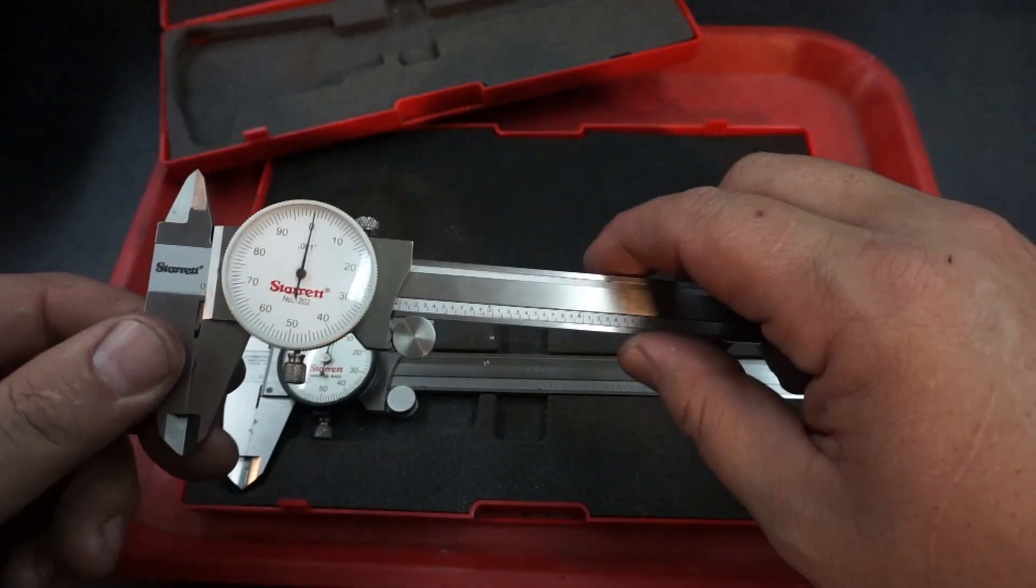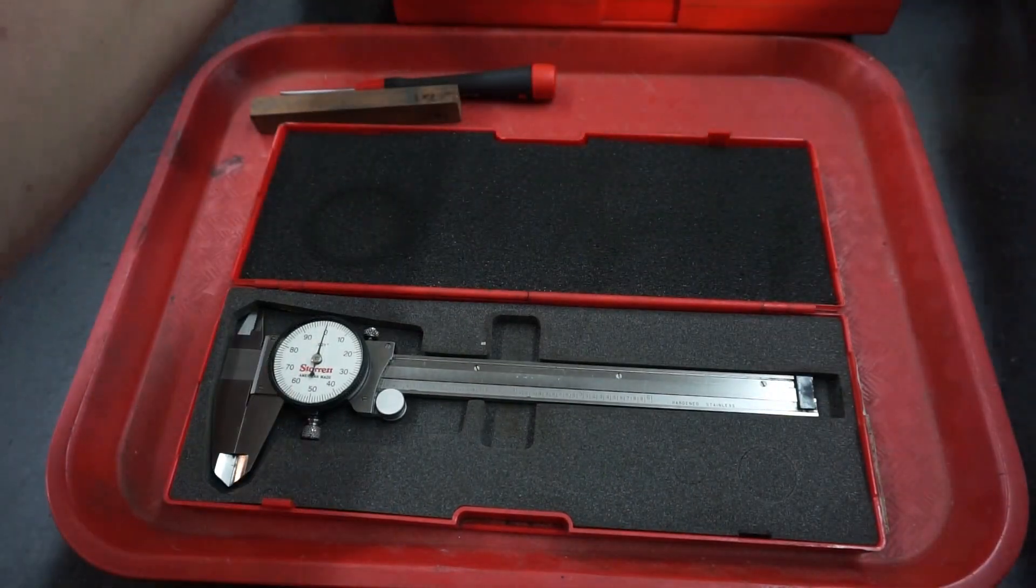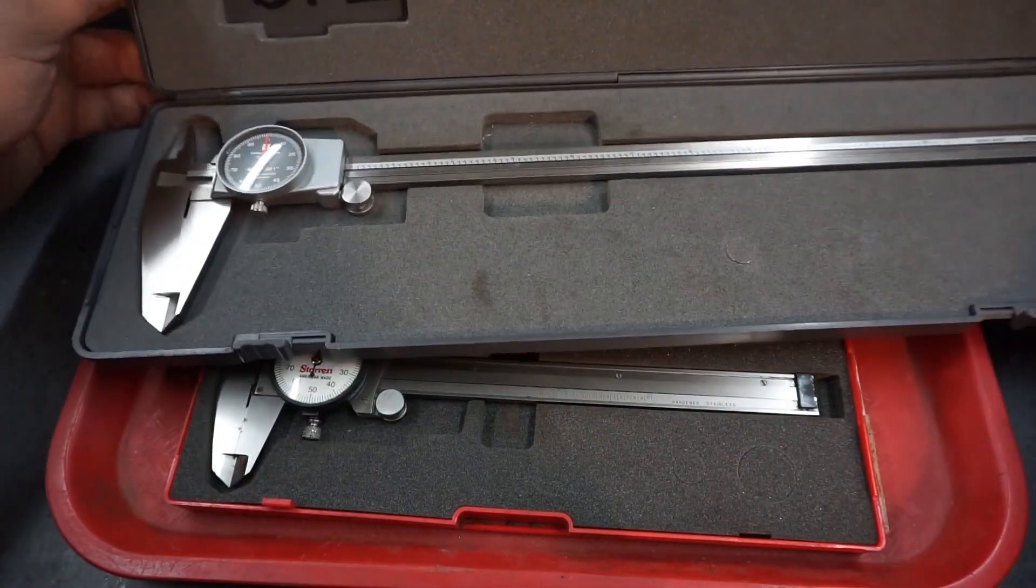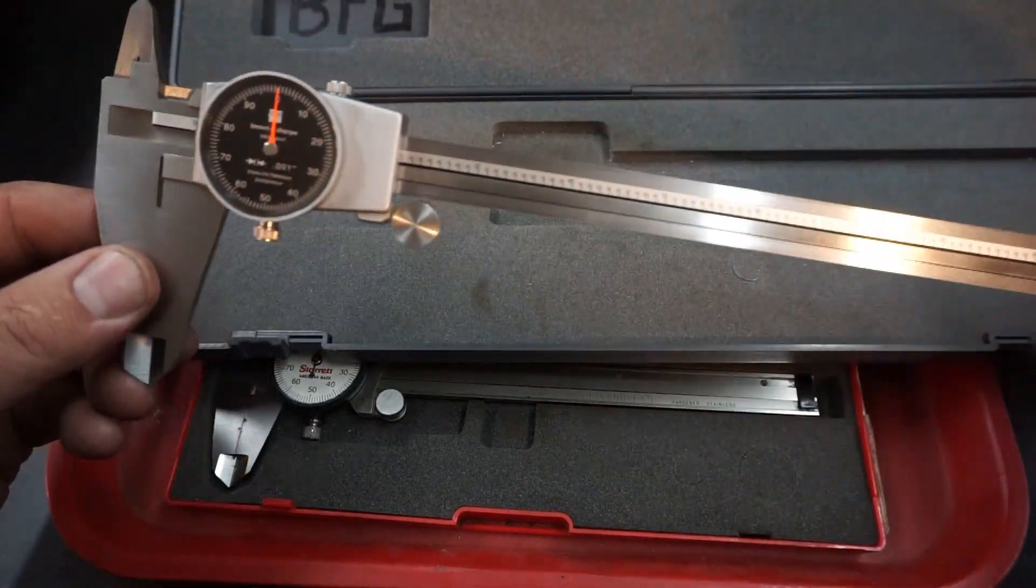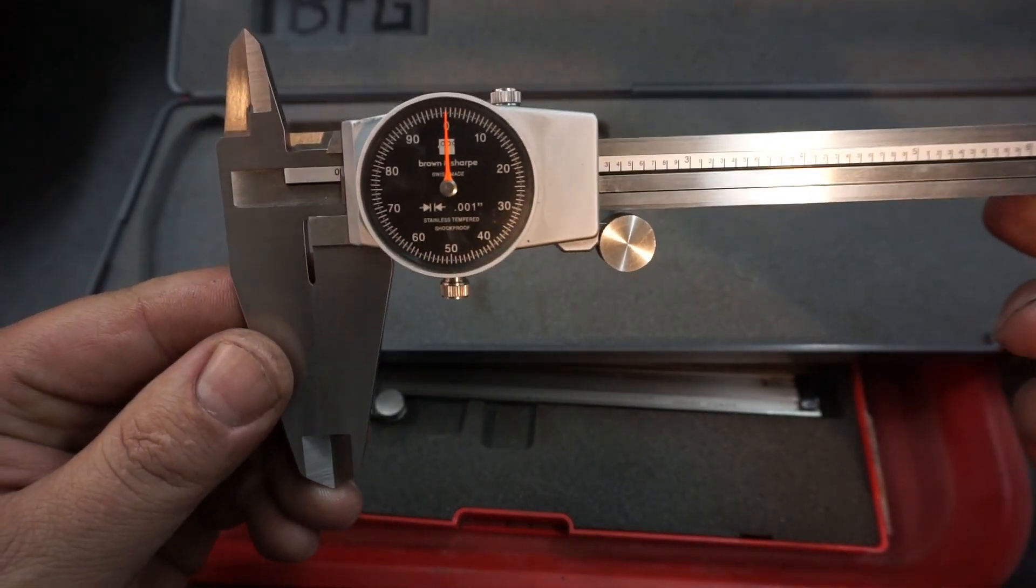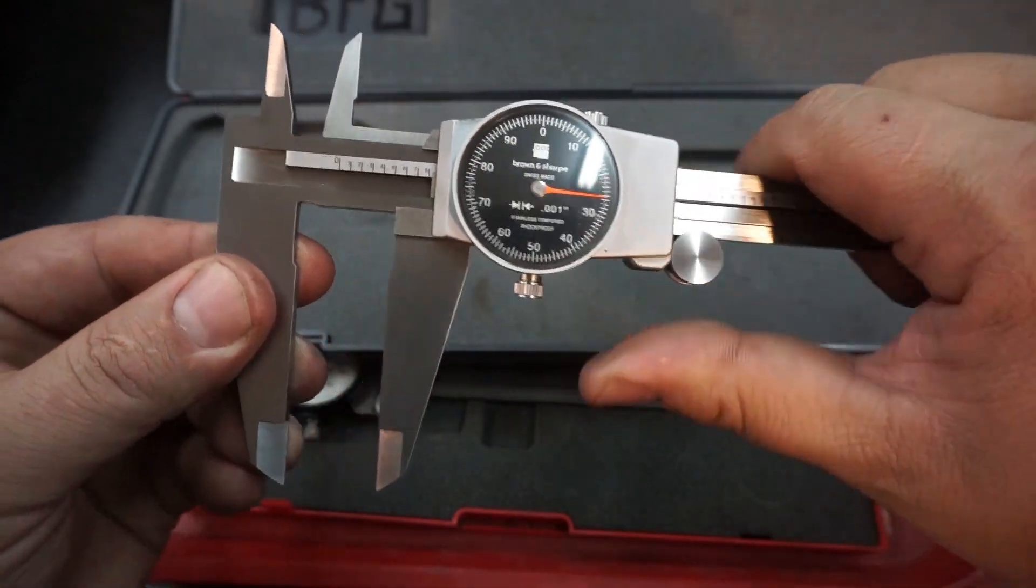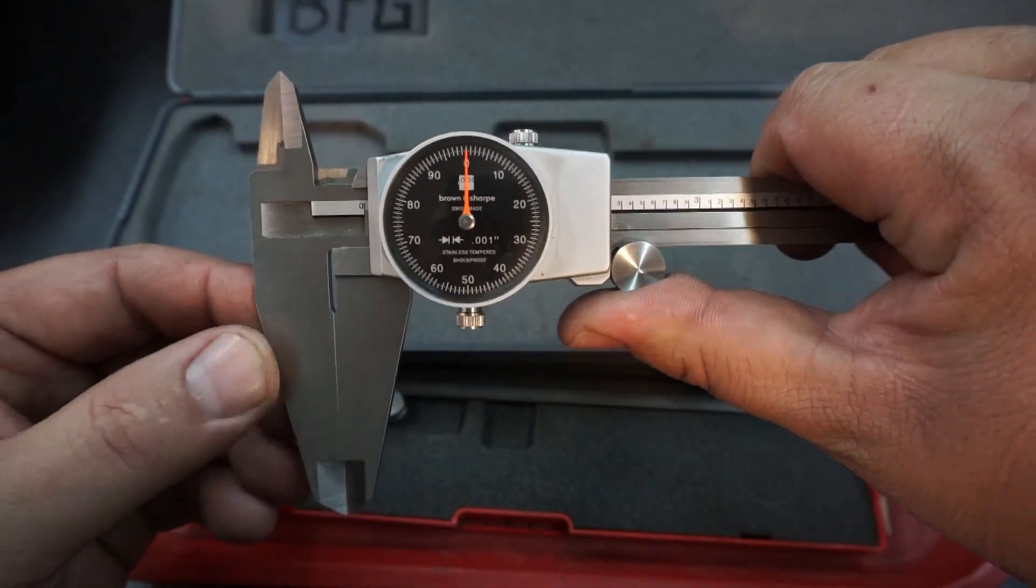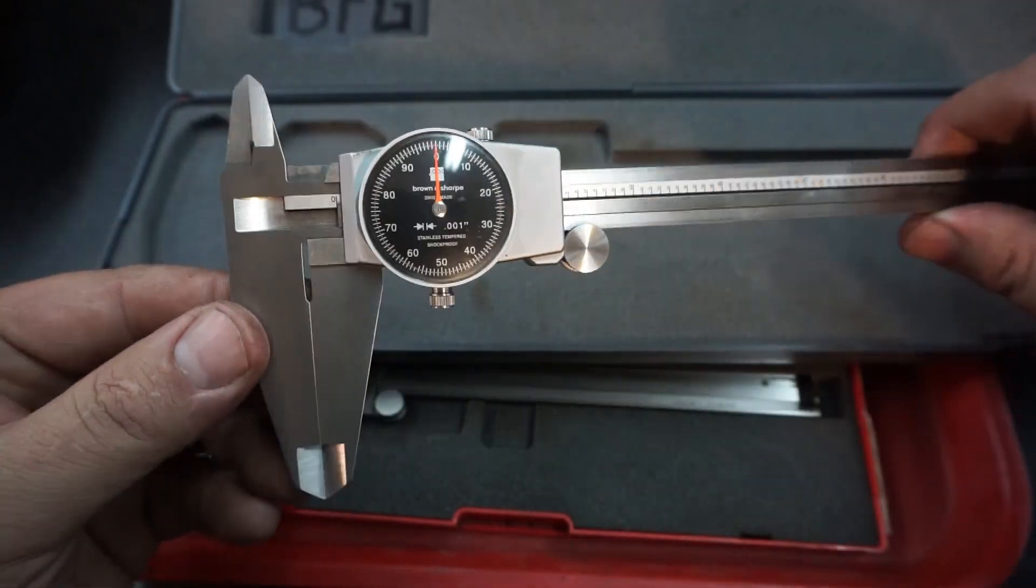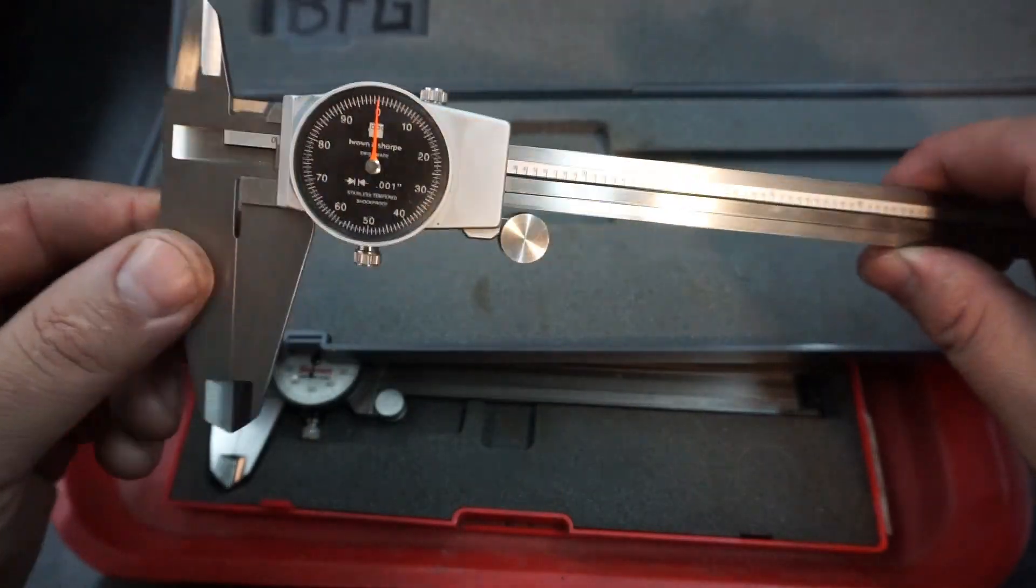And then one more for comparison, these are some that I picked up at a pawn shop a couple months back. Very nice calipers, these are the Brown & Sharp, the ones made over in Switzerland. And these Brown & Sharps are just always so smooth, they're even smoother than the Starrett. But again, see they don't have the screws on this top plate there you can remove.